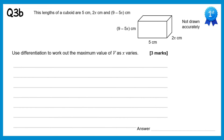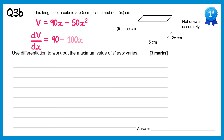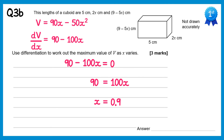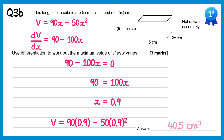For part B of this question we need to use differentiation to work out the maximum value of V. So we know V equals 90x minus 50x squared, and we'll find dV by dx. Differentiating 90x gives 90 and differentiating negative 50x squared gives negative 100x. We know at the maximum value of V this must equal 0, so 90 minus 100x equals 0. Add 100x to both sides, divide by 100, and x equals 0.9. Substituting back in: V equals 90 times 0.9 take away 50 times 0.9 squared, which gives 40.5 centimeters cubed.